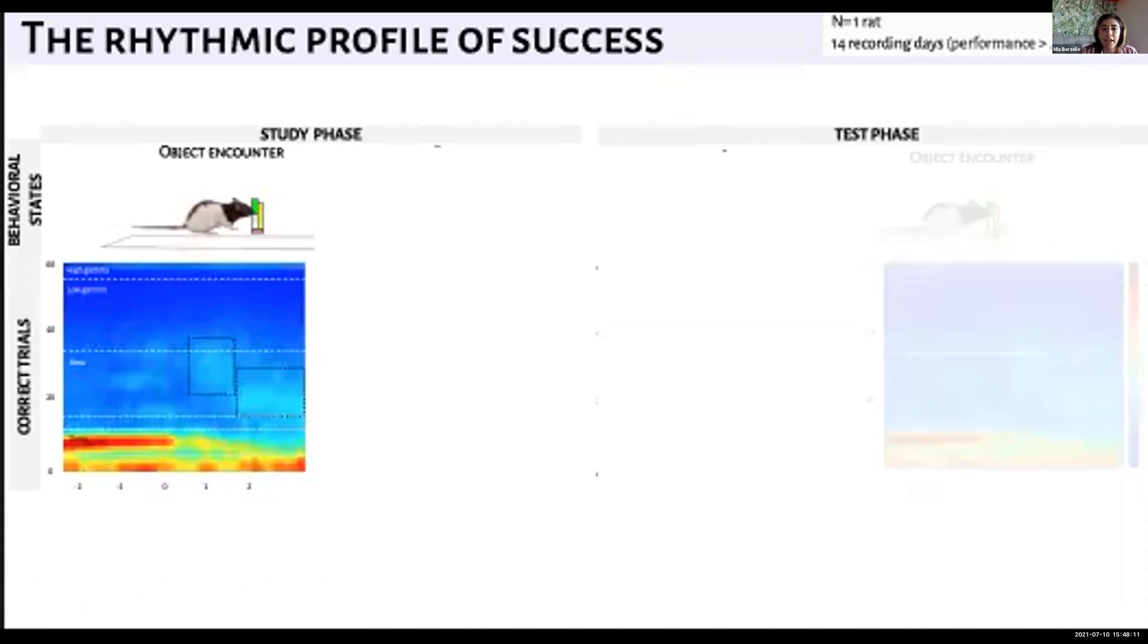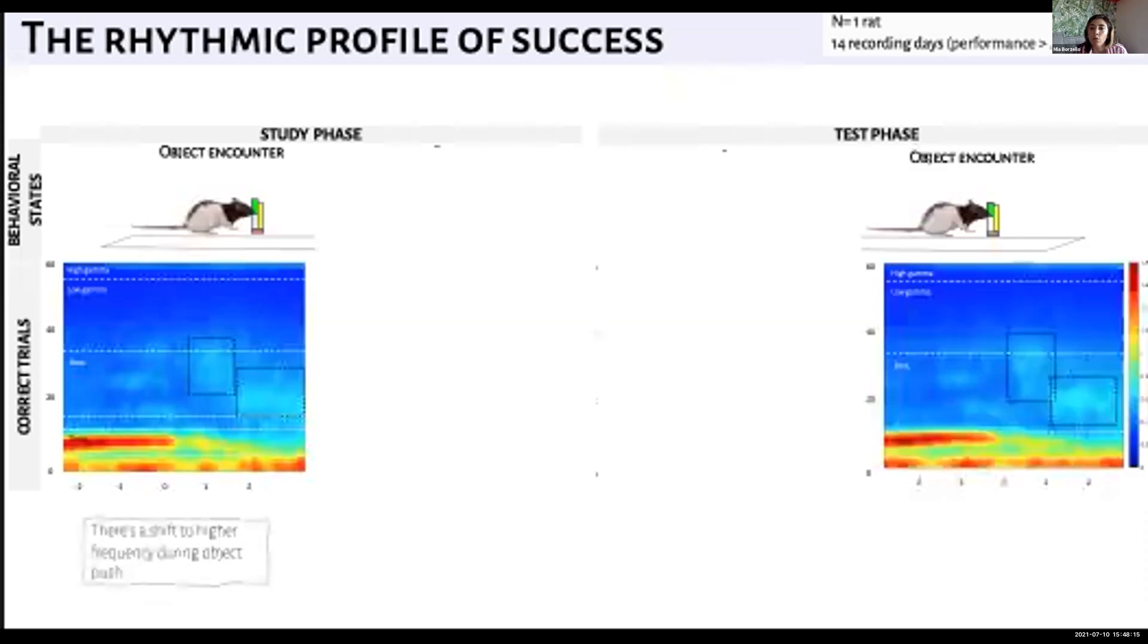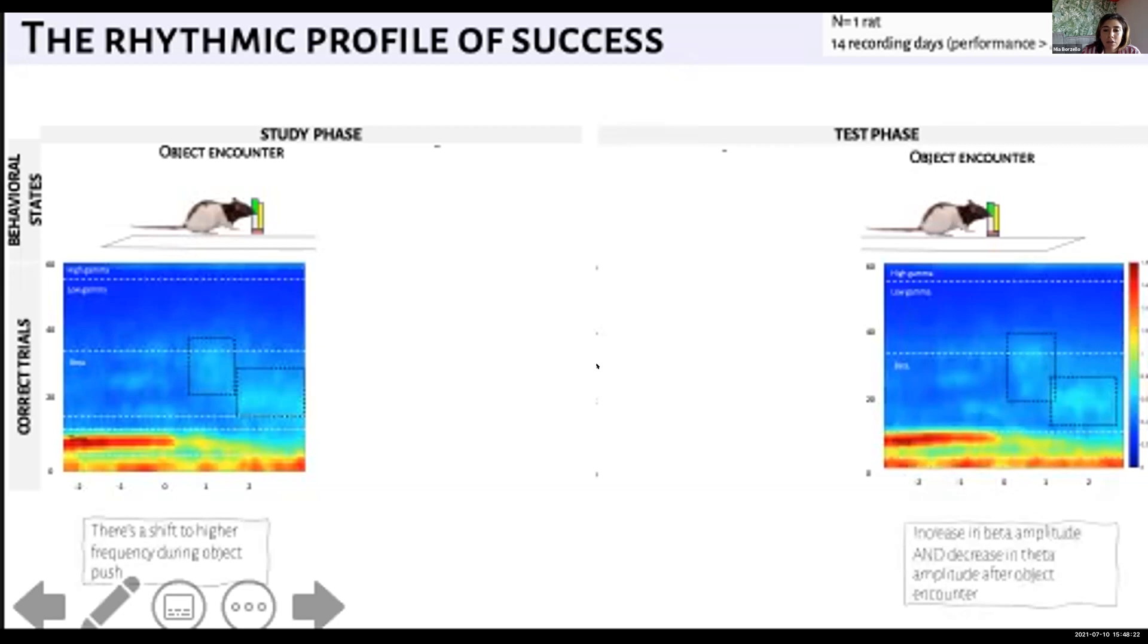Now let's look at the test phase, which we also see something similar. We see theta decrease while beta increases and we believe that this shift in the oscillatory profile of the regions indicates a change in the way the dentate is processing information during this important interval.